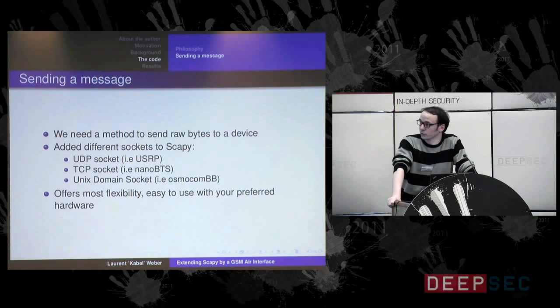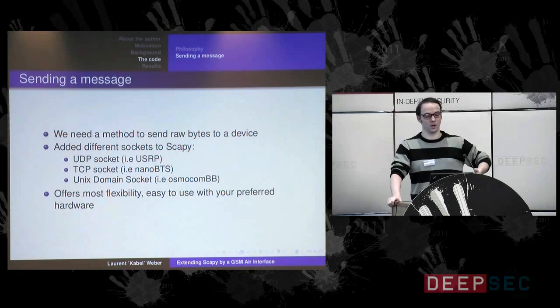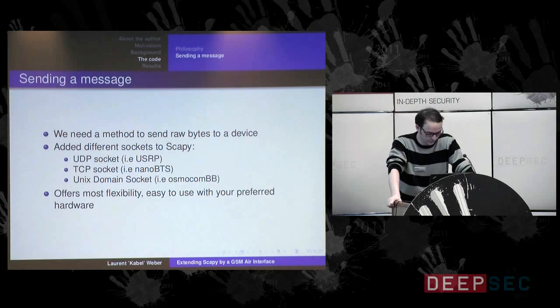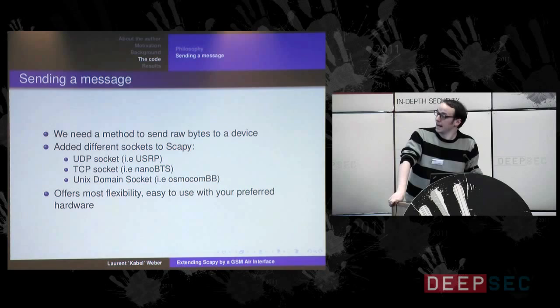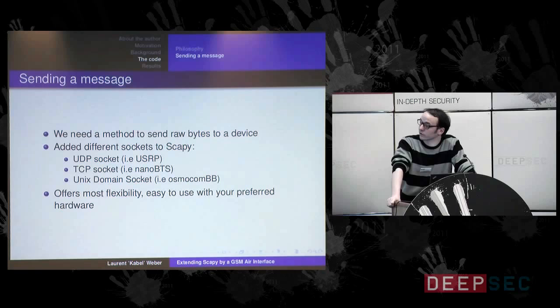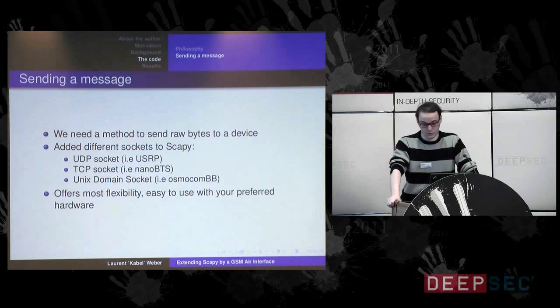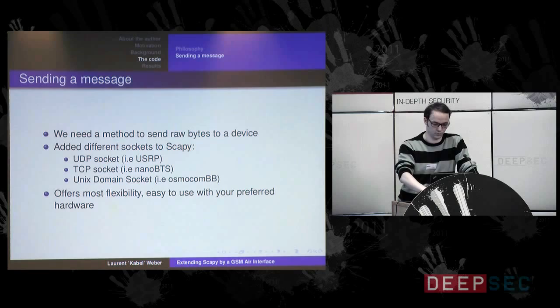My beta tester was using a nano-BTS with OpenBSC and did some hacks to also inject packets — he wanted a TCP socket, so I implemented that at the same time. The latest part I implemented was the Unix domain socket, since I thought it would be ready for someone who wants to implement the OsmocomBB feature I was discussing. All three types of sockets should allow the most flexibility, and users should be able to share code without much patching to make it work on different hardware.